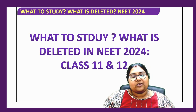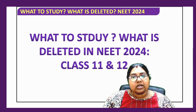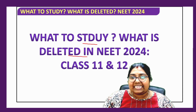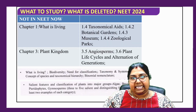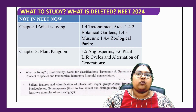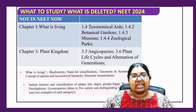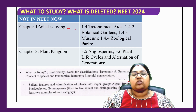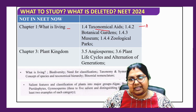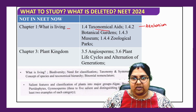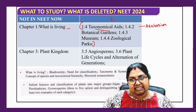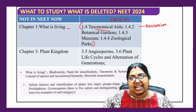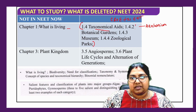Hello, my dear future doctors! Today we are going to learn what to study and what is deleted in NEET 2024 for both Class 11 and 12. Earlier, as far as Chapter 1 is considered — the 'What is Living' concept — the taxonomical aids section was there: herbarium, museum, zoos, botanical gardens, and all. That is totally deleted from NEET as well as CBSE.